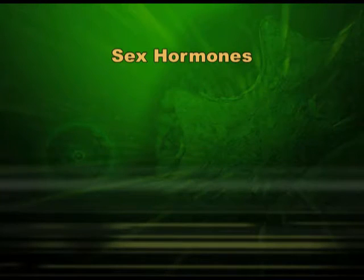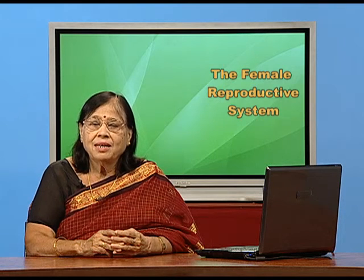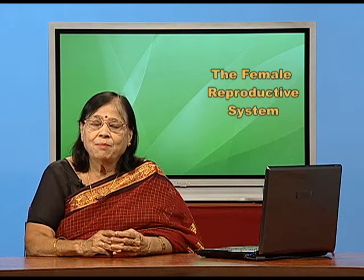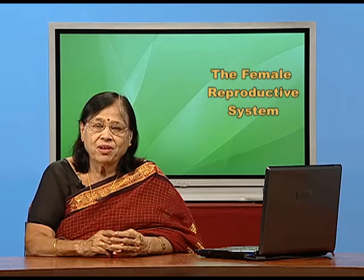There are two female sex hormones: estrogen and progesterone. The source of estrogen is the Graafian follicle, and the source of progesterone is the corpus luteum. This means estrogen is available in your body before ovulation and progesterone after ovulation. In the menstrual cycle, estrogen drives the follicular phase and progesterone drives the secretory phase. These hormonal interplays are very important for a normal menstrual cycle, and it is important for a woman to have a normal regular menstrual cycle to be considered fertile.